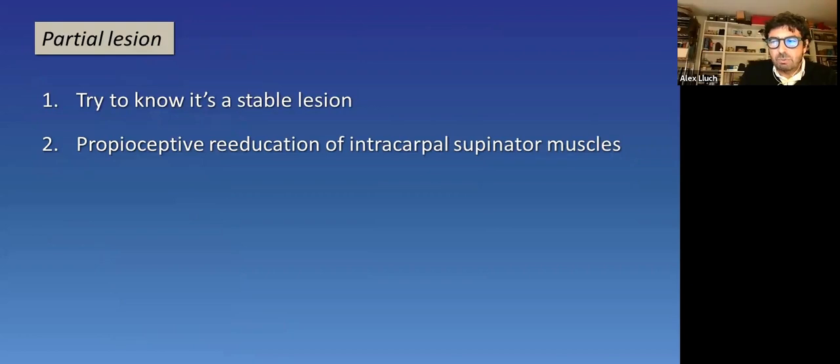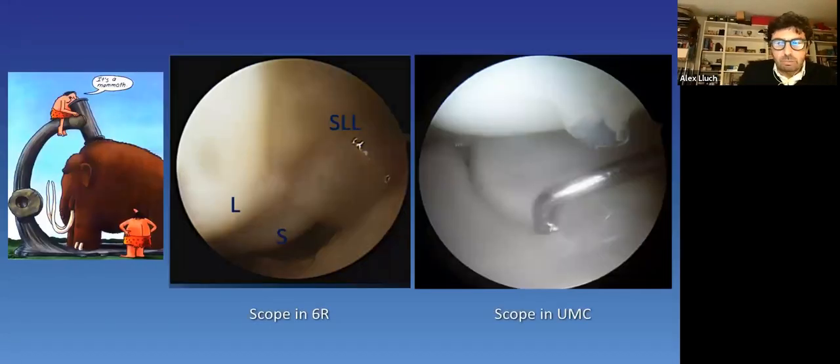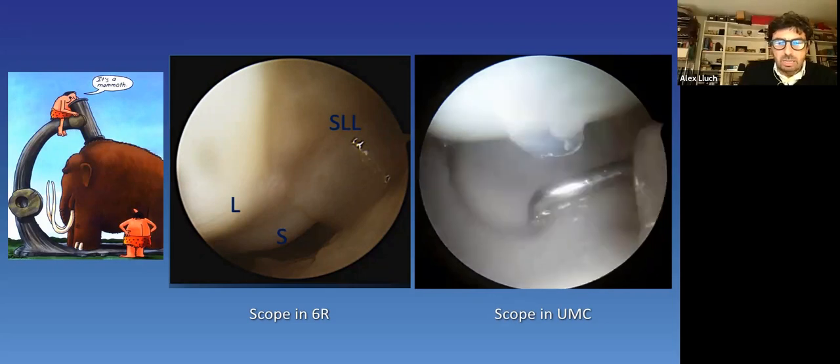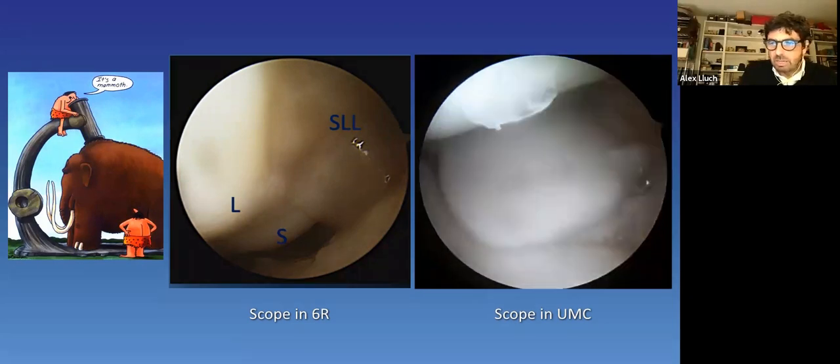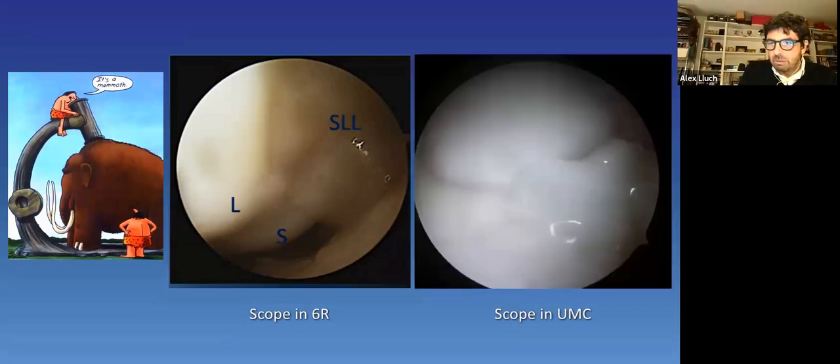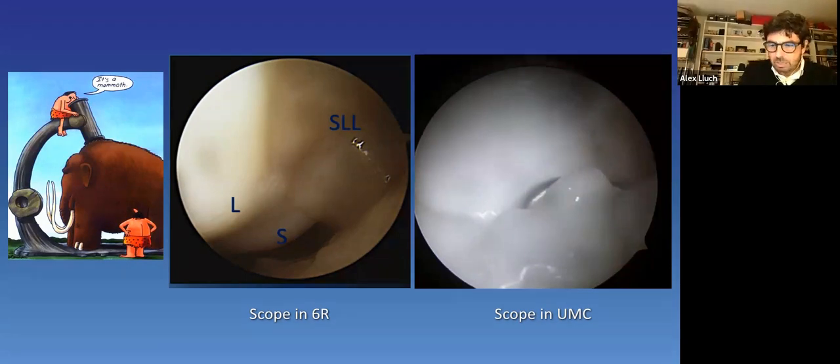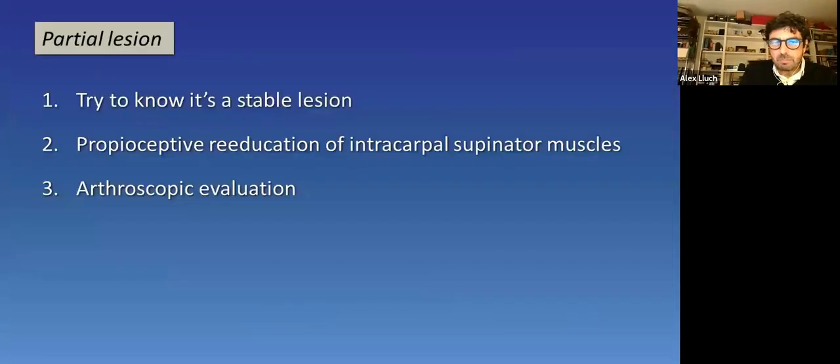If there's not enough improvement, an arthroscopic evaluation can be done. It will allow direct vision of the lesion. Sometimes, a synovectomy has to be done. And many times, an intracapsular occult ganglion is found and resected. And as you can see in those cases, one in a radiocarpal view and another one in a midcarpal view. And here you see how the ganglion is going to protrude on the dorsal part of the scapholunate interval. Finally, a customized postoperative protocol is applied to that specific patient.